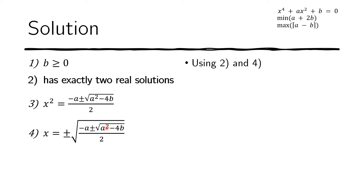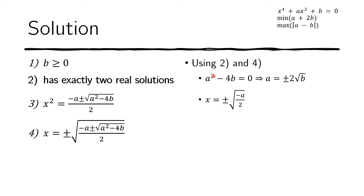We are left with the discriminant equal to zero. If A squared minus 4B equals zero, the plus-or-minus term vanishes and we are left with x squared equals negative A over 2. This gives us a relationship: A equals plus or minus 2 times the square root of B.